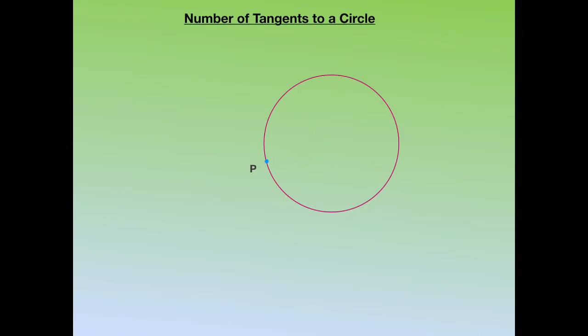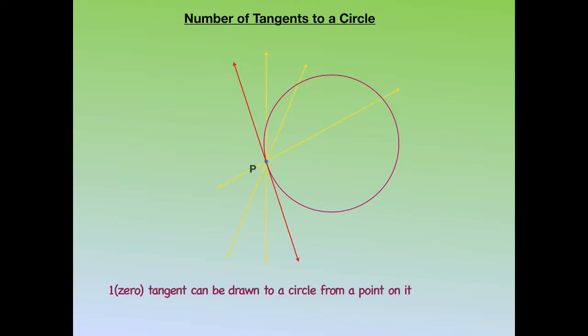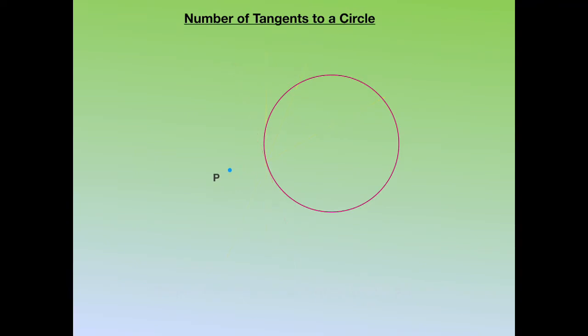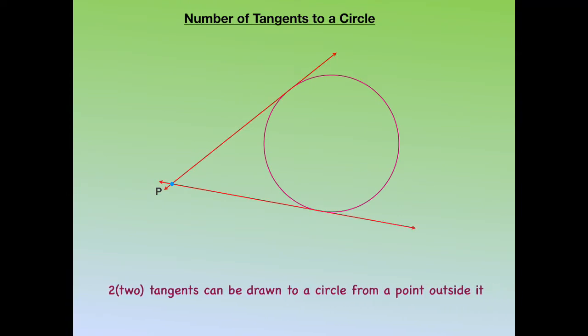If the point is brought on the circle, then we can draw only one tangent from that point, because all other lines will intersect at two points. And if the point is in the exterior of the circle, then we can draw two tangents to the circle from the point which is outside the circle.